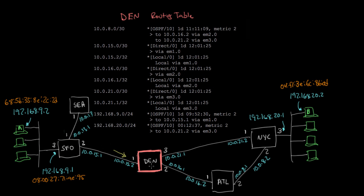Once the packet arrives at Denver, Denver does the same thing — it looks in its routing table for a matching prefix and finds 192.168.20.0/24 again. This time the entry says to send it to next hop 10.0.21.2 via interface EM3, which points toward New York, so Denver forwards it out that interface.